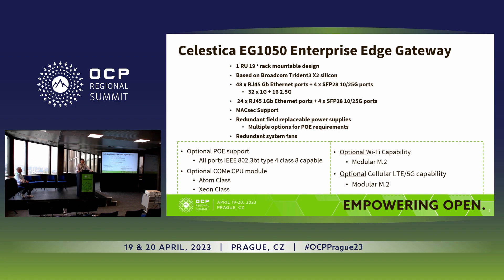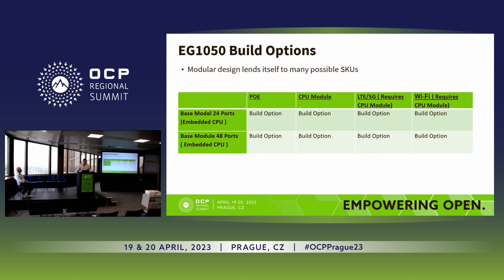Underneath the base design, you can see all the different options that could be built. These are build-time options — not field-replaceable — but there are different SKUs you can order based on the functionality you want this edge gateway to perform. On each of the base models, you'd have an option for power over ethernet, options for additional high-performance CPU modules, options for LTE or 5G connectivity, and options for embedded Wi-Fi. Many different orderable SKUs can come off of this design based on the use case.